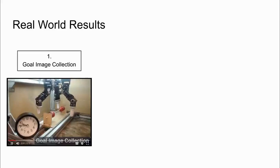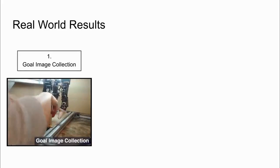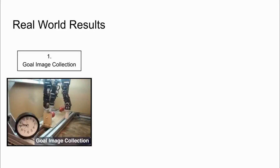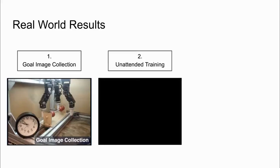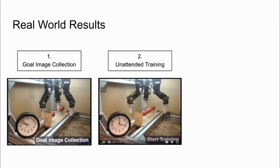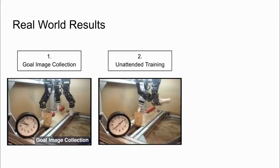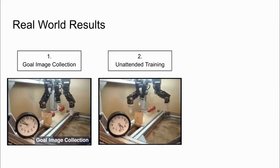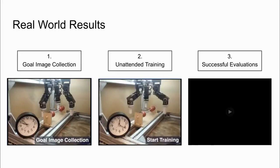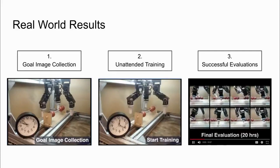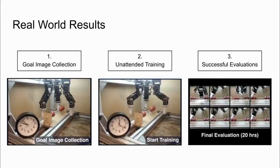We demonstrate this system on a real-world task. In this task, the robot needs to push beads apart, arranging two on either side from any initial configuration. We start by collecting images of the completed task, then the robot is left to train unattended for several hours. During this time, the policy, the perturbation controller, and the success classifier are all jointly trained on the collected data. Finally, we evaluate the policy from many configurations and find that the policy is able to successfully complete the task from all of them.